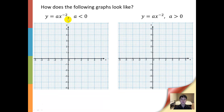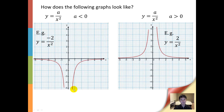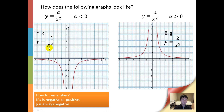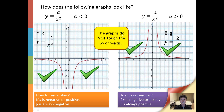Next, we shall look at power functions with a power of negative 2, rewritten as y equals a over x squared. When a is negative, the curve will look like this — y equals negative 2 over x squared. When a is positive, y equals positive 2 over x squared. When x is negative or positive, the y value will always be negative for a negative, lying in these two regions. For positive a, y is always positive, lying in these two regions. Make sure the graphs do not touch the x or y axis.